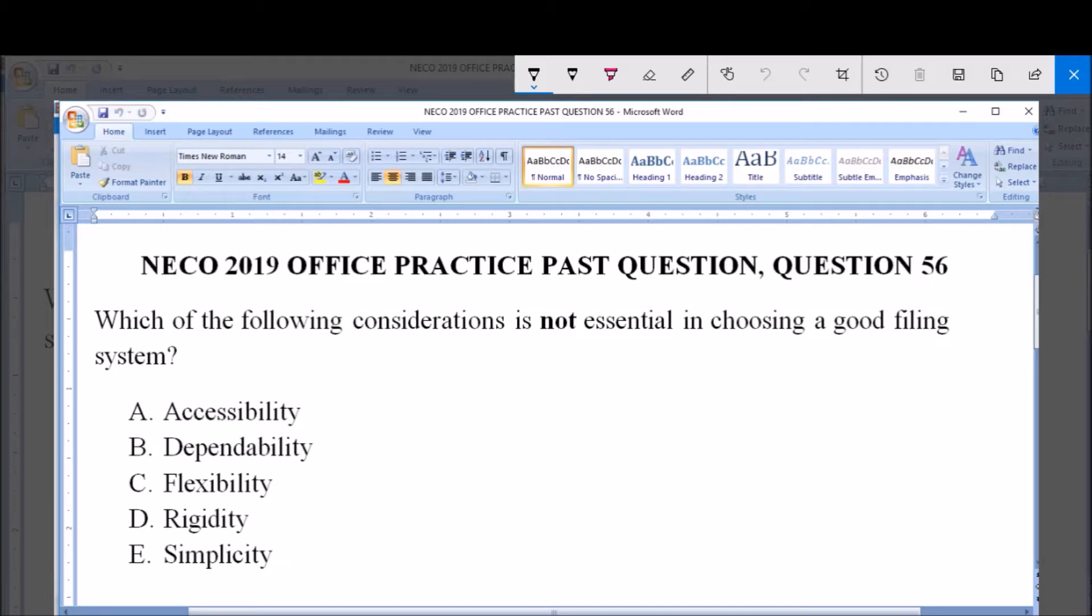Which of the following consideration is not essential in choosing a good filing system? A. Accessibility, B. Dependability, C. Flexibility, D. Rigidity and E. Simplicity.